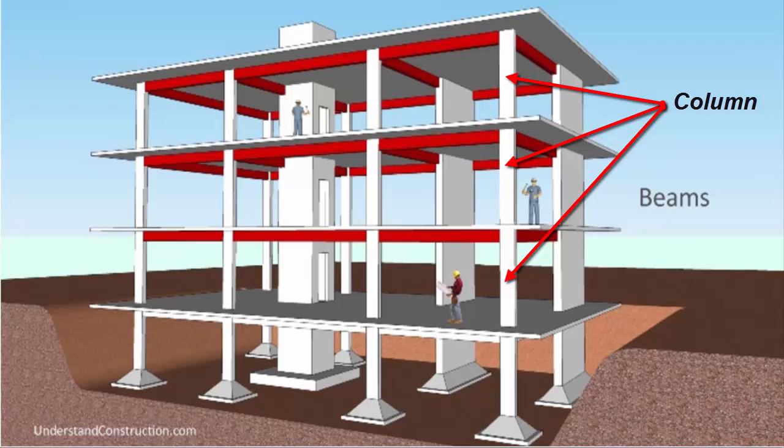For example, if you're living in a multi-storied building, say you're living on the third floor. The responsibility of a column is to transfer the load from third floor to the second floor and then from second floor to the first floor and then first floor to the ground floor. That's exactly what a column does. It transfers the load from the floor above to the floor below by resisting compression.